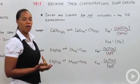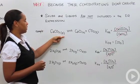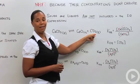So let's look at that. For the first example, let's say we have calcium carbonate solid in equilibrium with calcium oxide solid and carbon dioxide gas.